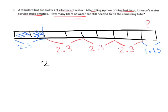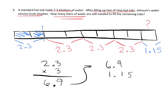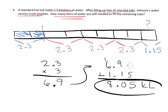So a quick way to do that would be to do 2.3 times 3, we get 6.9. And now we're going to add 6.9 to 1.15. Nothing here, so we're going to imagine that to be a 0. So 0 plus 5 is 5, 9 plus 1 is 10, carry the 1, 1 plus 6 plus 1 is 8. So the answer is there's 8.05 kiloliters in the remaining seven hot tubs.